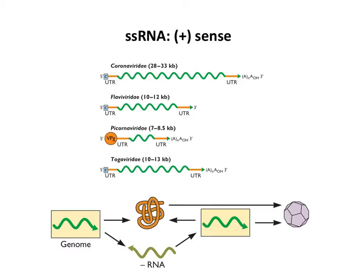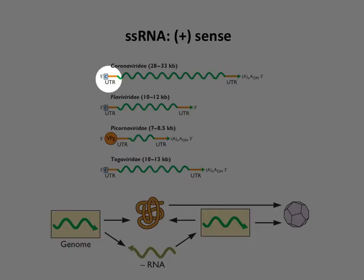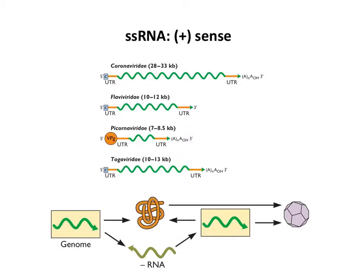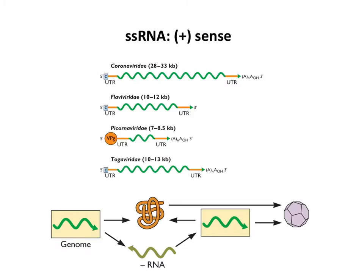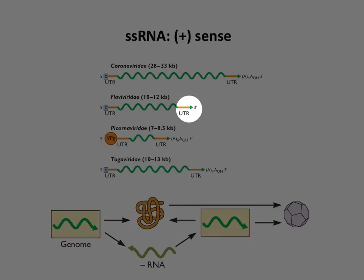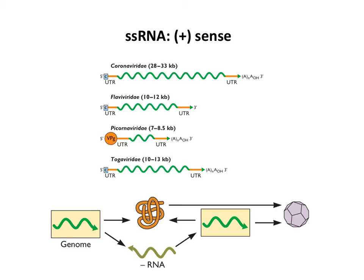These viruses typically have open reading frames—the green part of the RNA—which is an mRNA that can be translated into protein. They have 5' untranslated regions (UTR) that are not translated, and 3' untranslated regions. Some have a poly-A tail, and some are capped at the 5' end. For efficient translation, an mRNA needs a 5' cap and a 3' poly-A tail, but not every virus follows these rules. Flaviviruses aren't polyadenylated, and picornaviruses don't have a cap—they have a protein at the 5' end. We'll talk about how they get around those requirements.